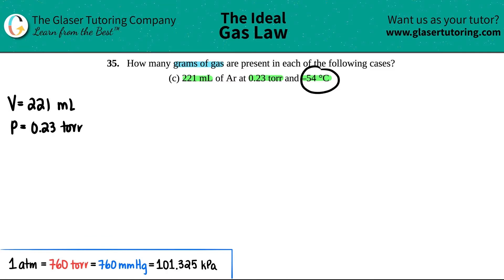They give me negative 54 degrees Celsius, that's a temperature. And they're looking for grams of the gas, specifically a mass. The specific element they told us was argon, so they're looking for the mass of argon.